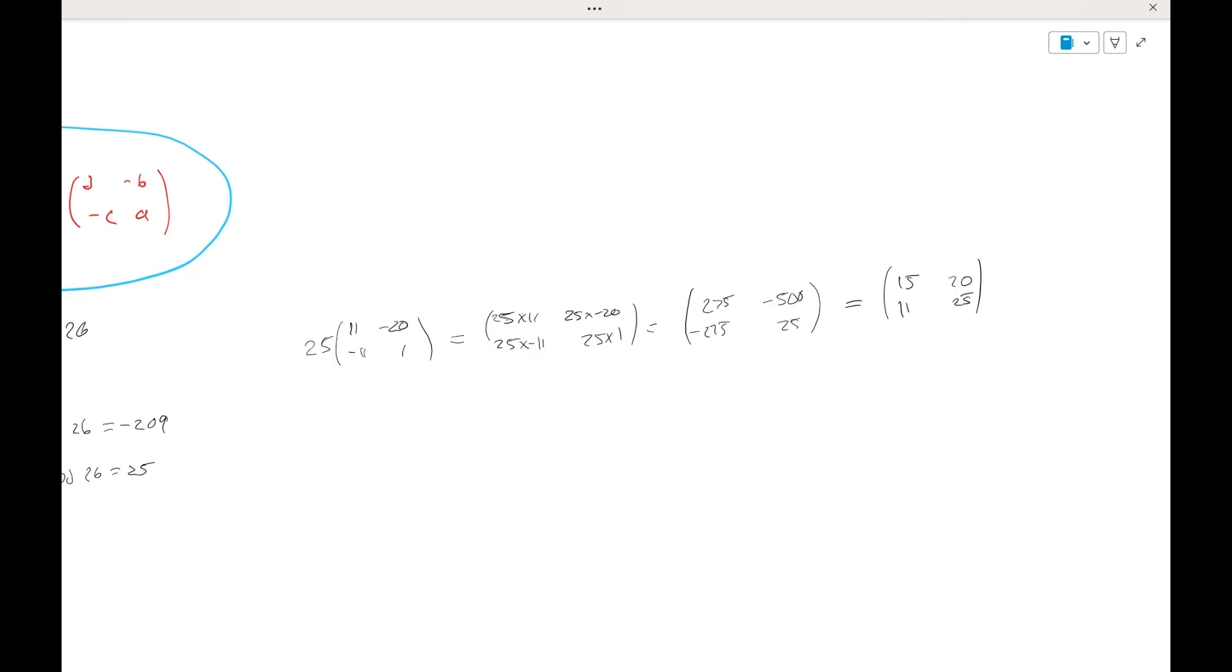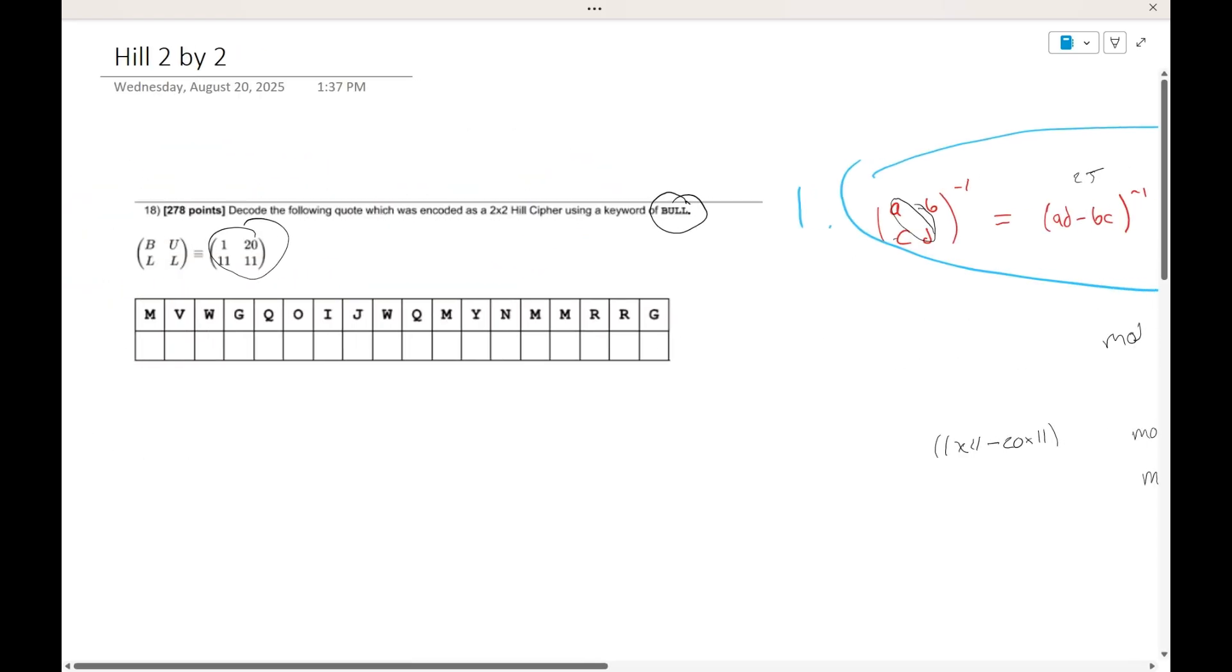Okay, so now that we have our inverse matrix, it is 15, 20, 11, 25. Now we're going to try to decode our message. And what you're going to do is multiply it by every pair of 2. And you have to convert these to their numerical value. So these numbers range from 0 to 25. In the case where Z would be 25 and A would be 0.